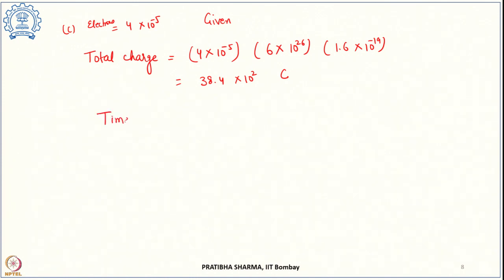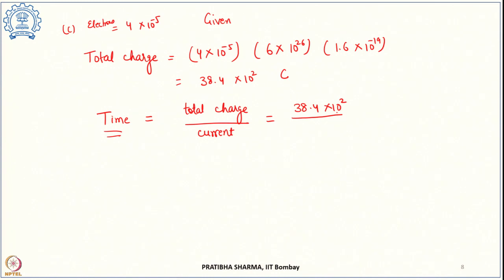The time required for electrolysis is the total charge divided by the current, since current equals charge divided by time. This is 38.4×10² coulombs divided by 0.81 amperes, which gives 4740 seconds or 1.32 hours. That is the time required for electrolysis.